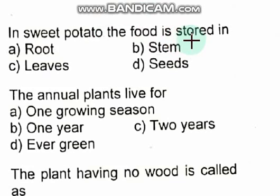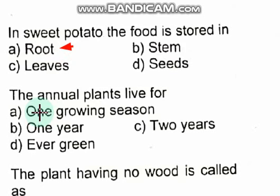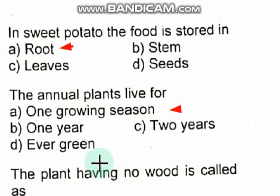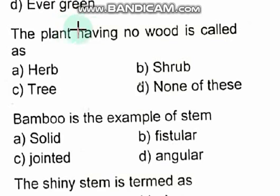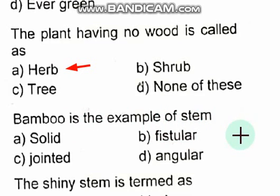In sweet potato, the food is stored in the root — option A is correct. An annual plant lives for one growing season. The plant having no wood is called herbaceous. Bamboo is an example of a fistula stem — option B is correct.